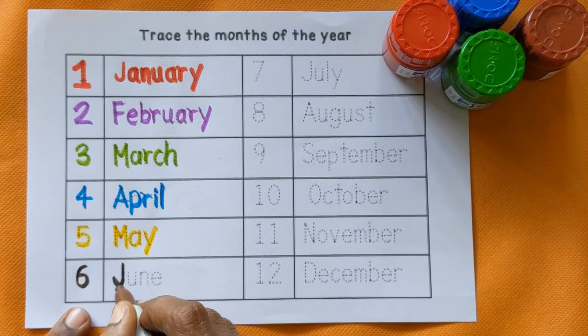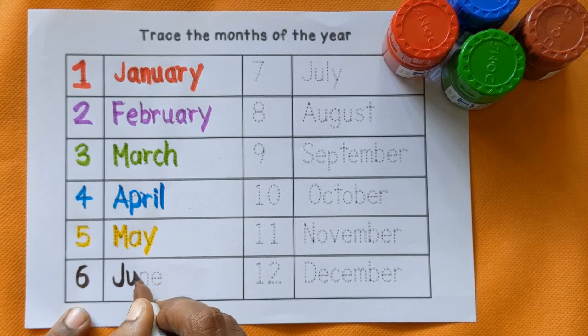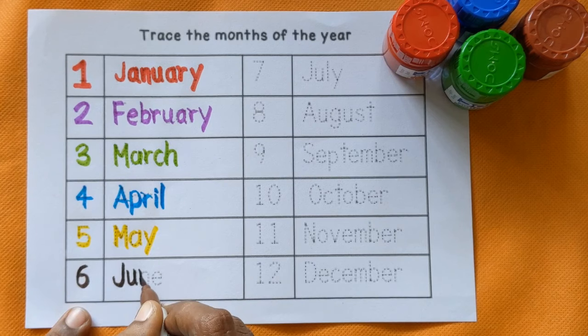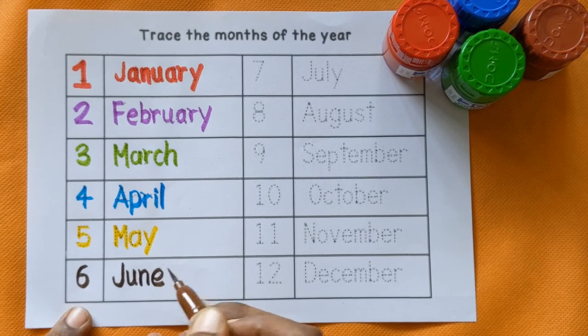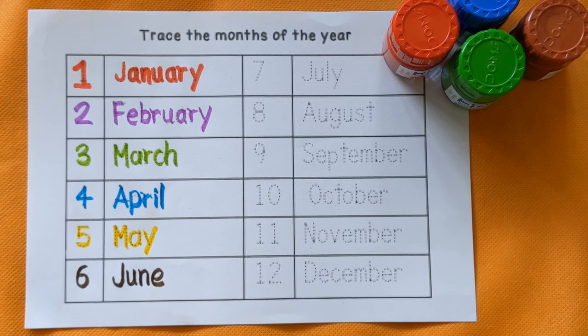Number 6. J, U, N, E — June, brown color.